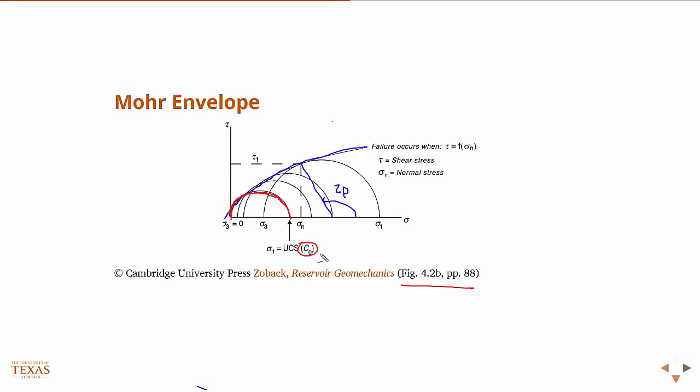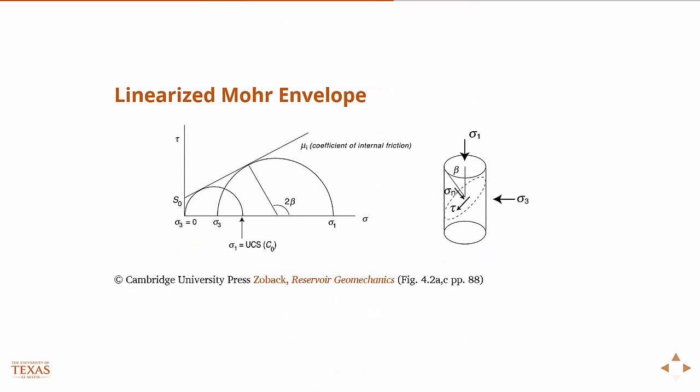So if we take a look, this is the real Mohr envelope. If we go to the lab, we do a series of these tests. The real envelope is basically drawing a line that connects the tangent points of those curves.